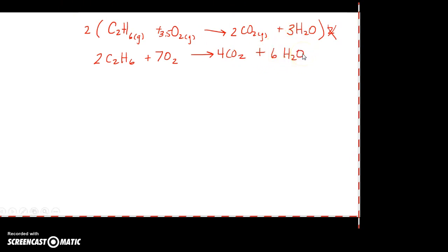So we need to double check whether or not that worked. Sometimes it doesn't. So I look at my carbons. I have four carbons here. I have four carbons on my product side. In my reactants, I have 12 hydrogens. I have 12 hydrogens in my product side.